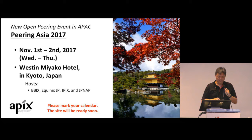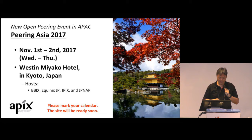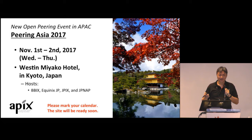The most important thing we would like to highlight are the new open peering events in Asia Pacific — probably the first in our region. We will hold it in early November in Kyoto, Japan. The hosts will be BBIX, Equinix JP, JPIX, and JPNAB. From what I heard, some of them will have their 20th anniversary this year.